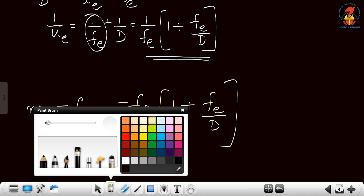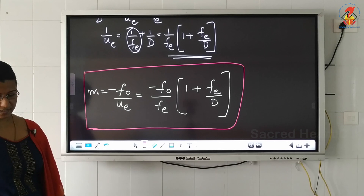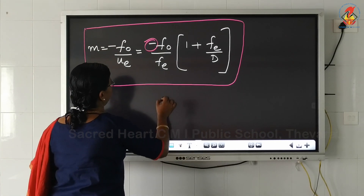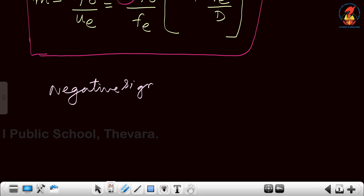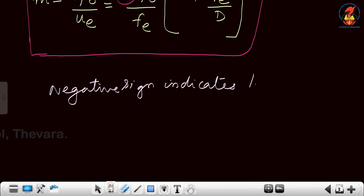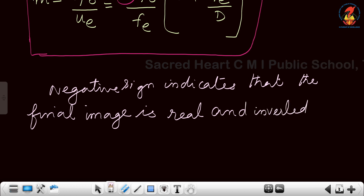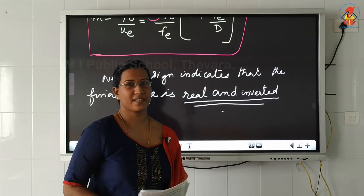This is the equation for magnification produced by an astronomical telescope when the final image is obtained at the least distance of distinct vision. The negative sign in this equation indicates that the final image is magnified and inverted. This is the important point — the final image is real and inverted. I hope this derivation is clear to you. Thank you.